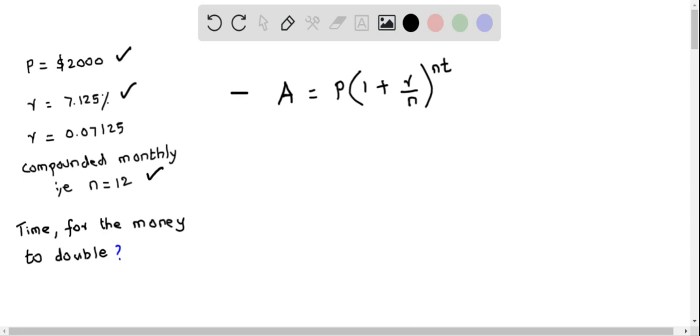We will use the compound interest formula, which says that amount equals P times 1 plus r by n raised to the power of nt.